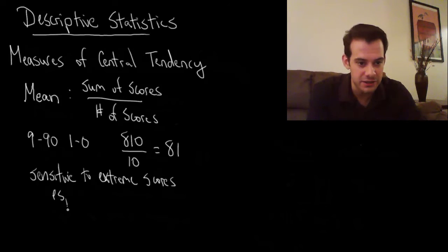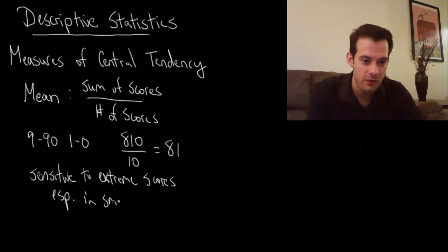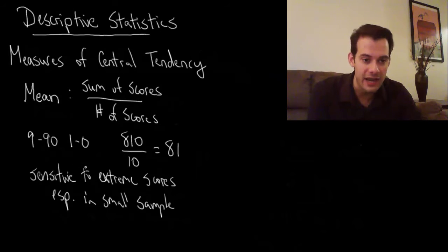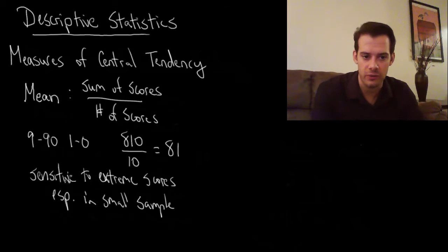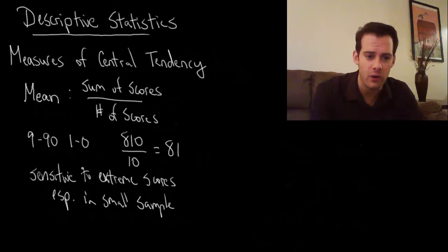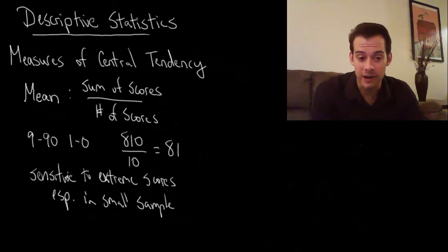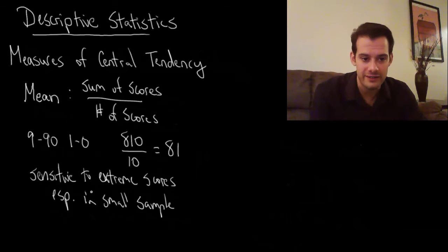This is especially true if we have a small sample size. Because I only had ten students, this effect was very noticeable. If I had a thousand students and one student got a zero, it wouldn't affect the mean very much. But because we had such a small sample of only ten students, it had a very strong effect.